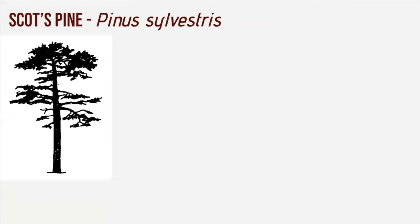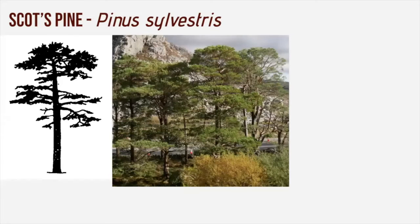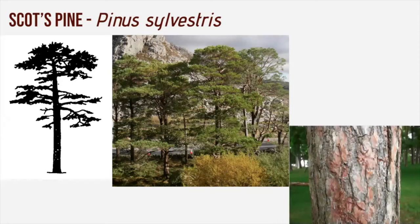Scots pine, Pinus sylvestris — there's a silhouette image there. It's a conifer native to the Scottish Highlands, Europe and Siberia. They generally live to 250 years old but can survive up to 600 years. They have distinctive scaly bark which develops plates and fissures with age, and the bark turns orange coloured on the top half of the tree — that's quite one of the key features.